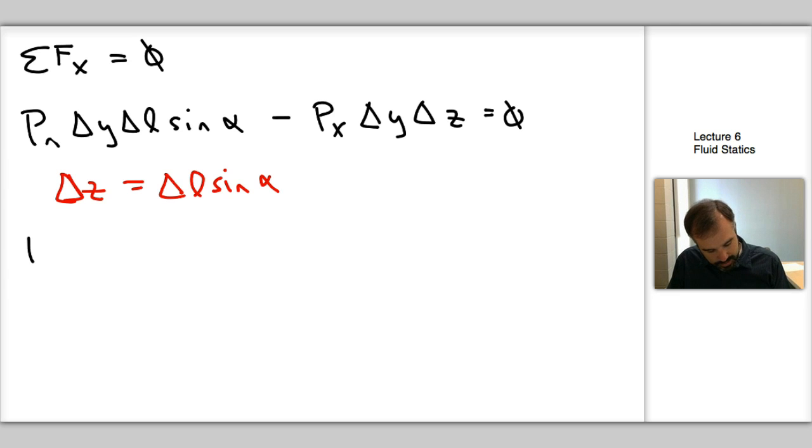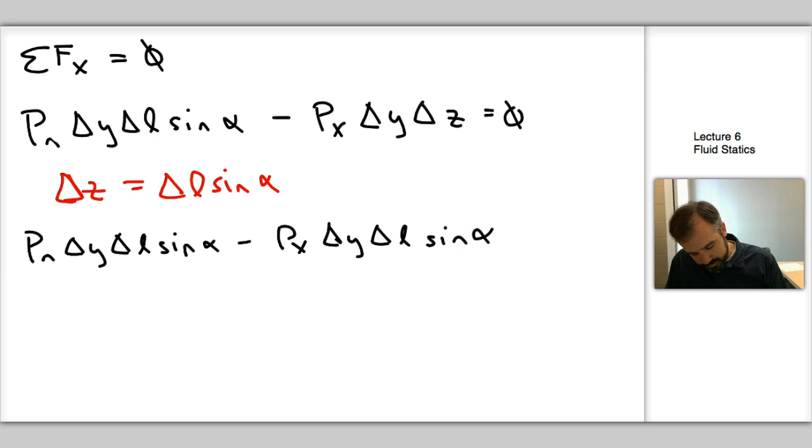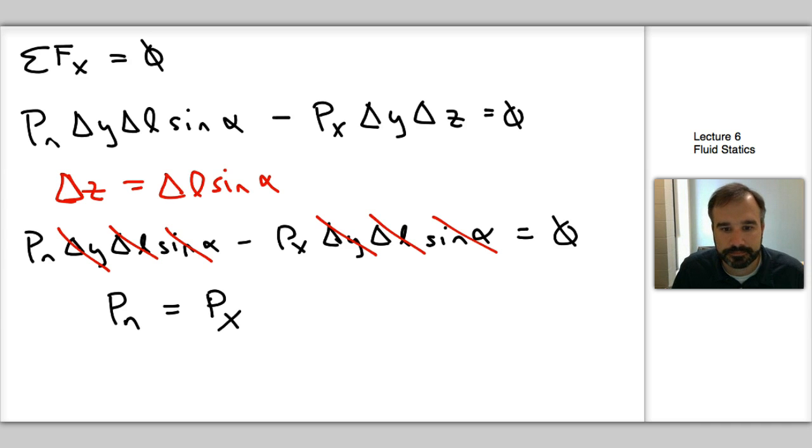Let's plug that into our equation. We have PN delta Y delta L sine of alpha minus PX delta Y delta L sine alpha equals zero. Now we can start crossing some things out. We have delta Y in both of them, and we have delta L in both of them, and we have sine alpha in both. So ultimately what we end up with is PN is equal to PX.